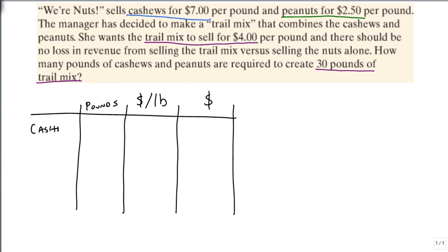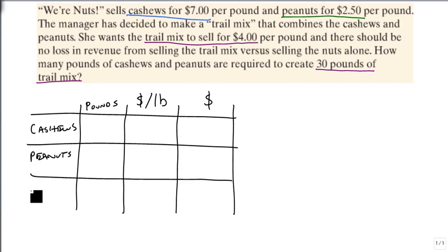And we're going to mix cashews, we're going to mix peanuts, and that's going to create our trail mix as our last item. And now we just need to fill in our table according to what information we have.